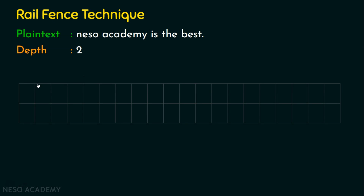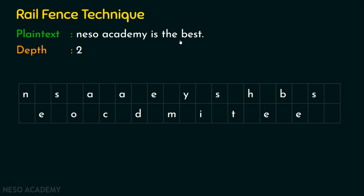Since the depth value is 2, we are going to visualize 2 rows because the depth is mentioned as 2. Now we are going to write this plaintext in the diagonal format. Writing 'Neso Academy is the best' in diagonals: N-E-S-O (Neso), A-C-A-D-E-M-Y (Academy), I-S (is), T-H-E (the), B-E-S-T (best). So I have written the plaintext in the diagonal format using only 2 rows. This is actually the rail fence pattern.